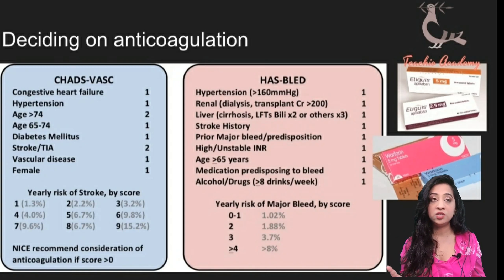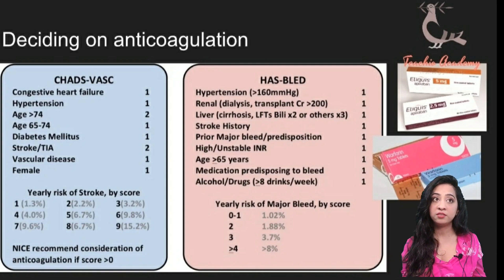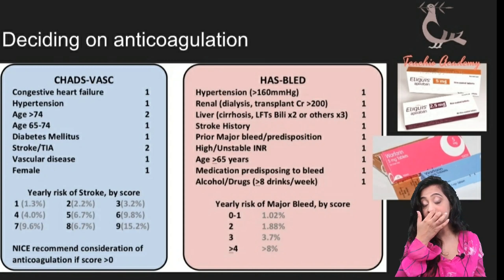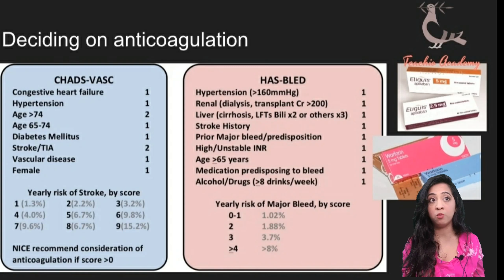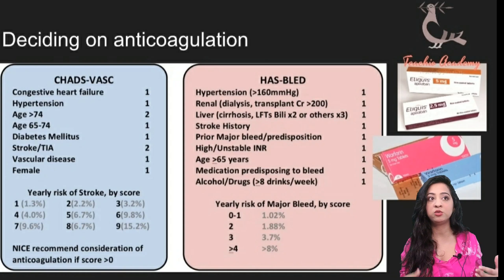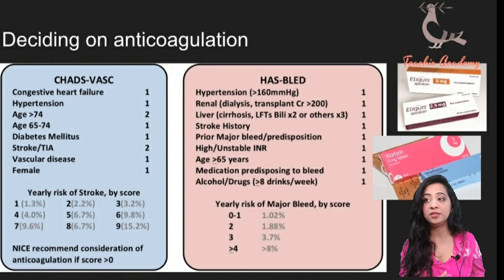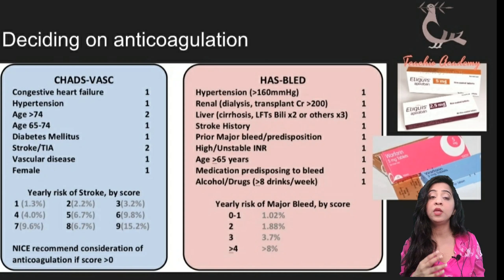Two things with anticoagulation: you have to decide based on the CHA₂DS₂-VASc score and the HAS-BLED score. The CHA₂DS₂-VASc score is something you definitely need to memorize for your PLAB 1 exam. C stands for congestive heart failure, H for hypertension, A for age greater than 74 which scores 2 and age 65–74 scores 1, diabetes mellitus scores 1, previous stroke or TIA scores 2, vascular disease is 1, and female sex is 1.